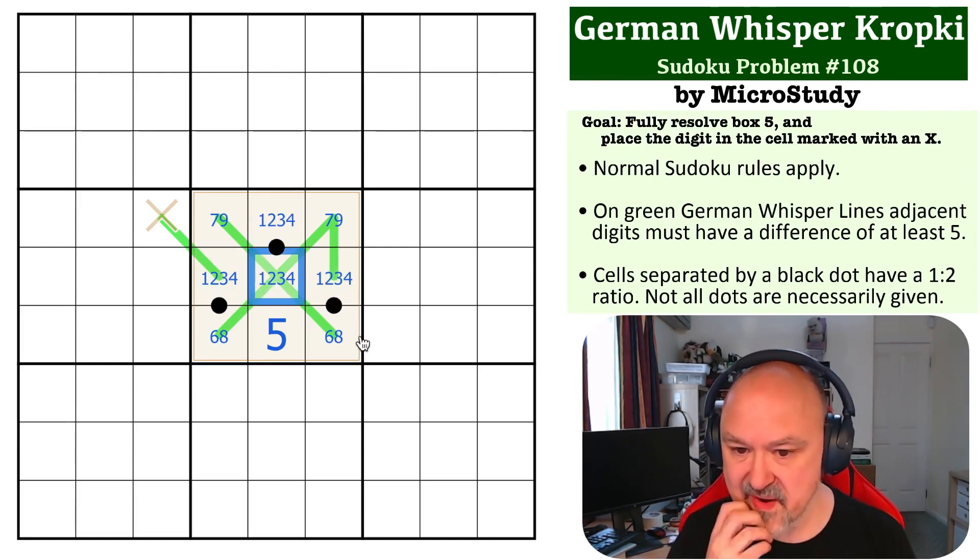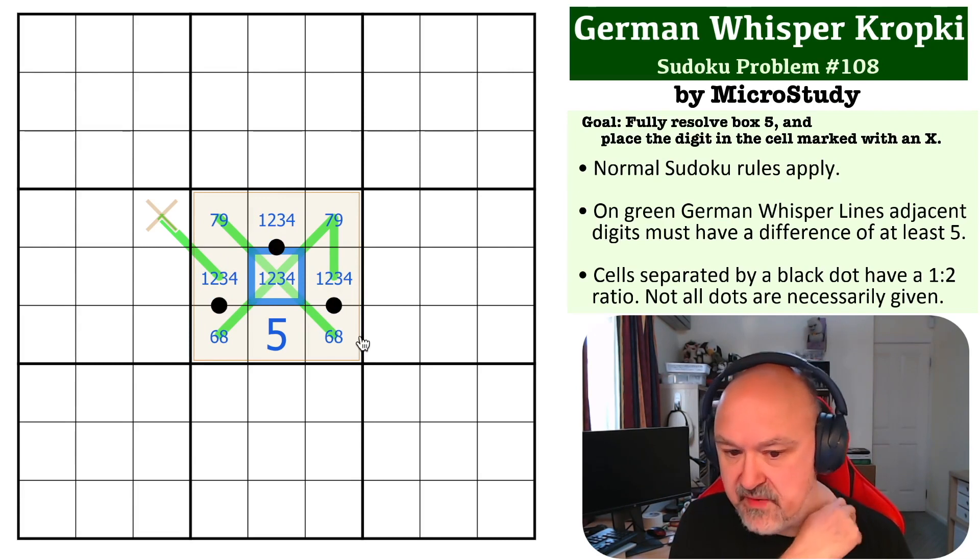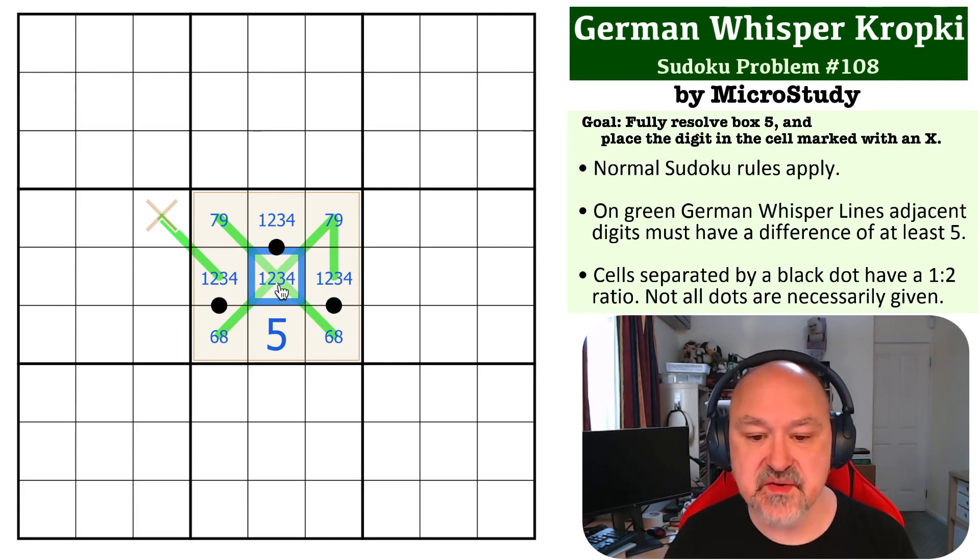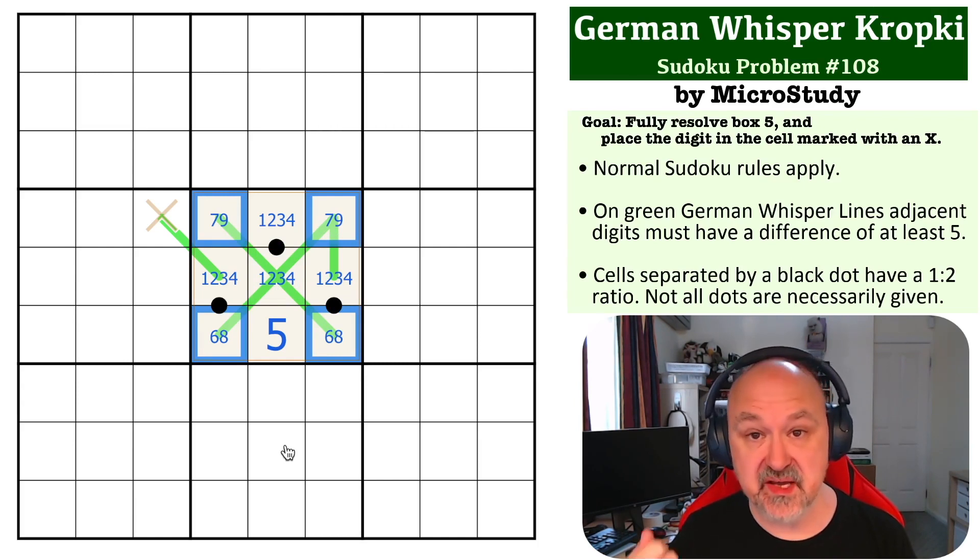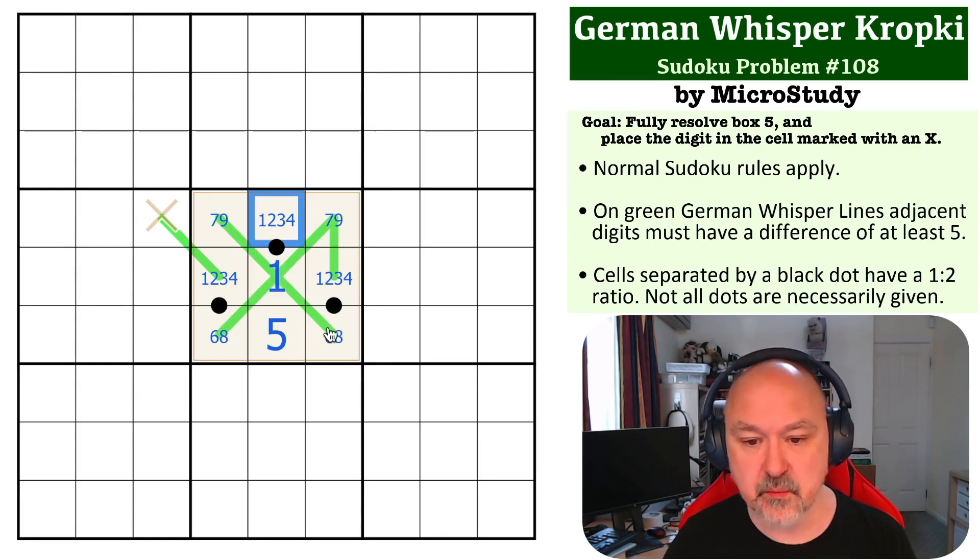Now this cannot be a 4. In fact, this is immediately restricted to being a 1 because it sees all 4 high digits, which means one of them must be a 6. And the only digit within 1 to 9 that is 5 away from 6 is 1. So this becomes the 1, which immediately makes that a 2. So these can't be 1 or 2, they have to be 3 or 4, which works for these ratio dots, fortunately.